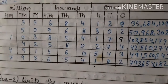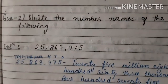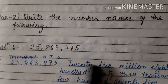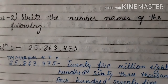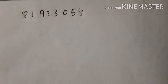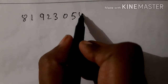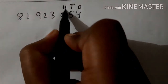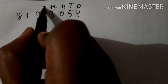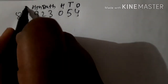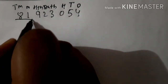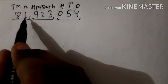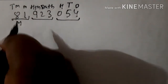Question 2: Write the number name of the following. Looking at the place value chart — Ones, Tens, Hundreds (Ones period), Thousands, Ten Thousands, Hundred Thousands (Thousands period), Million, Ten Million (Millions period). The first number gives us: two hundred eighty-one million.